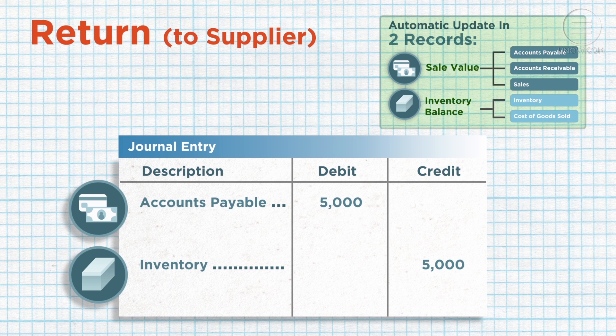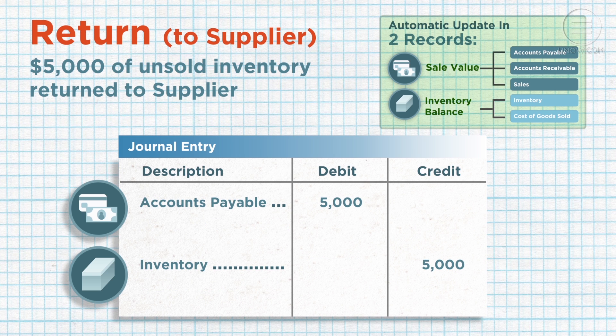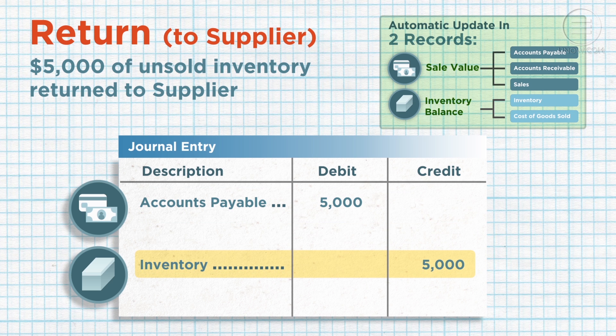Inventory returned to the supplier will affect two accounts: accounts payable and inventory. In this case, you would debit accounts payable and credit inventory.